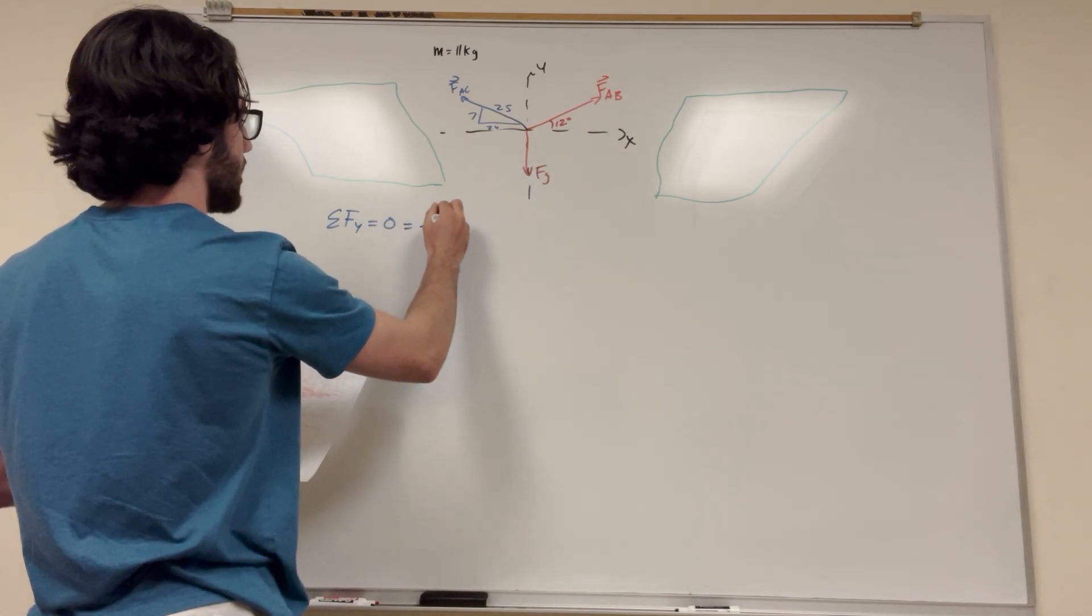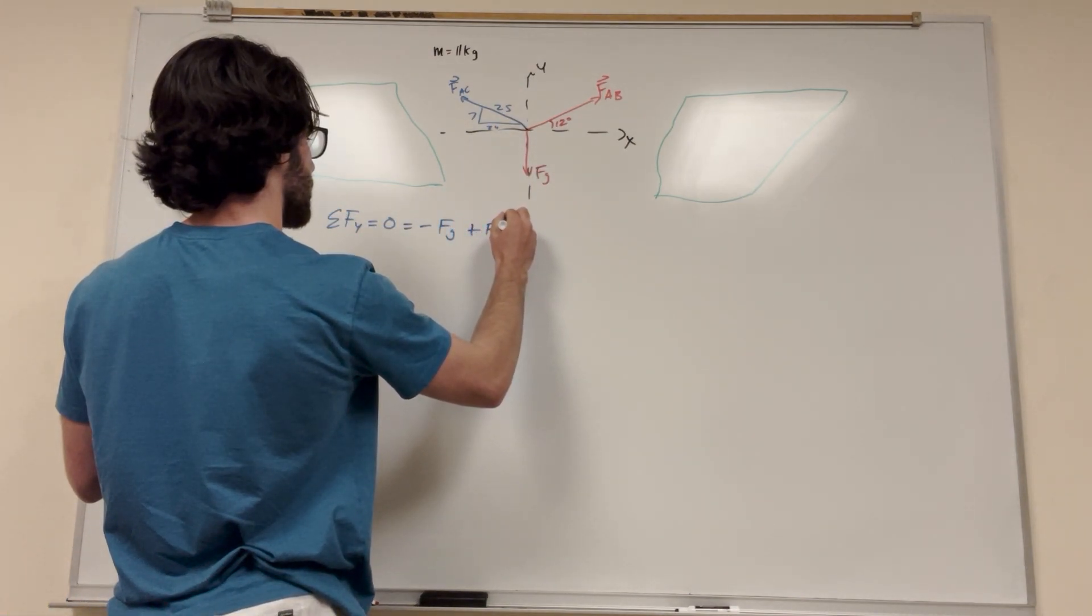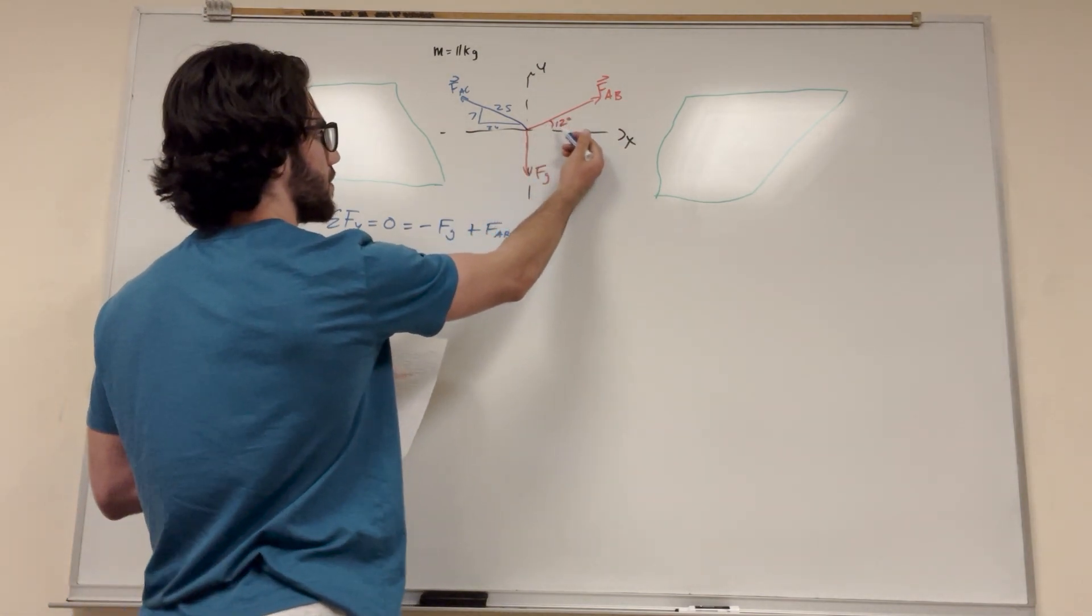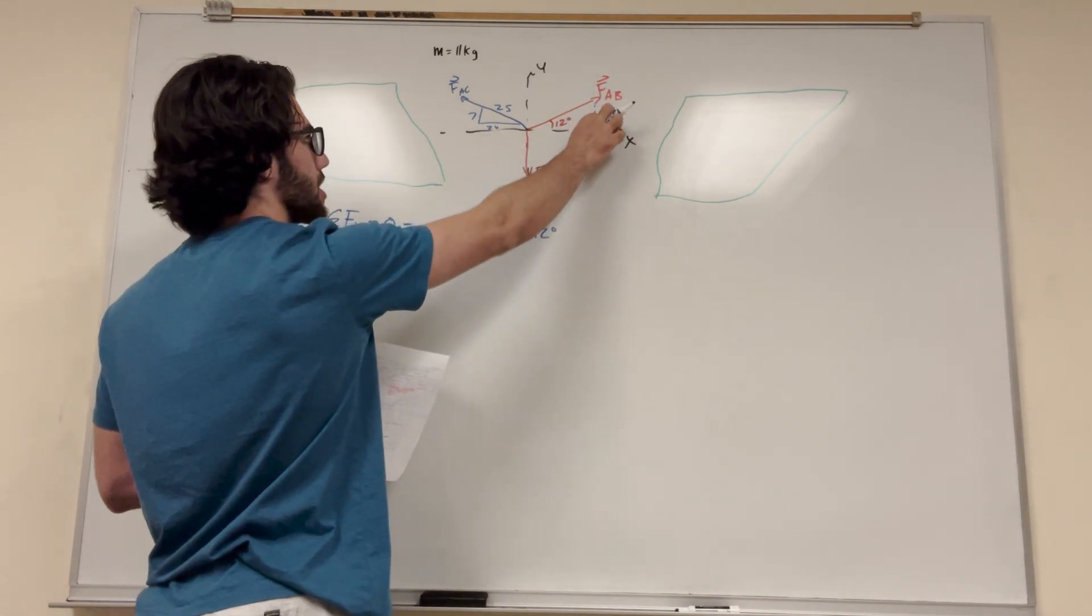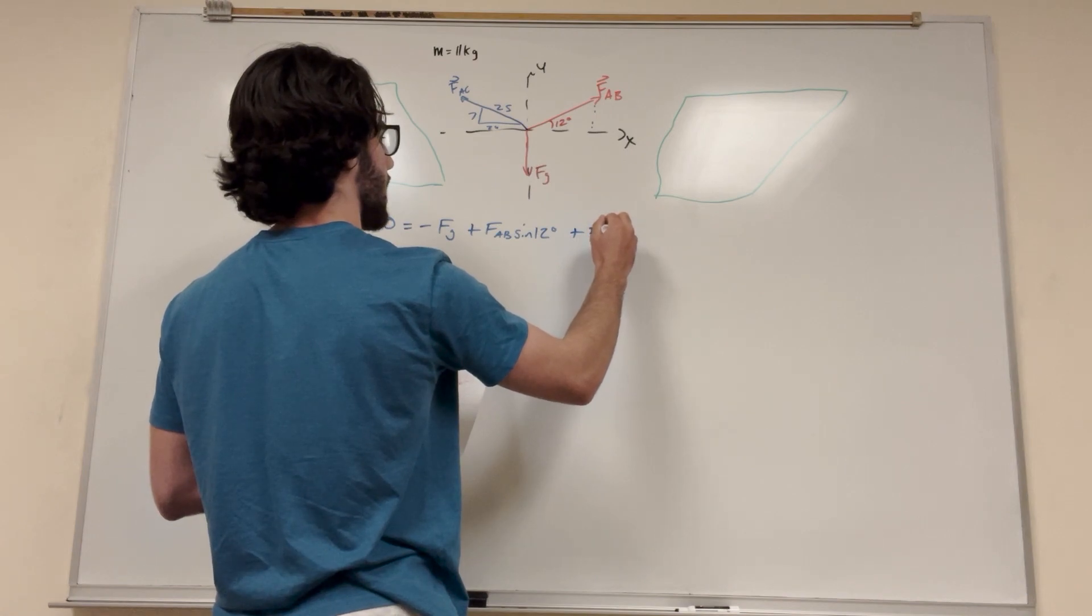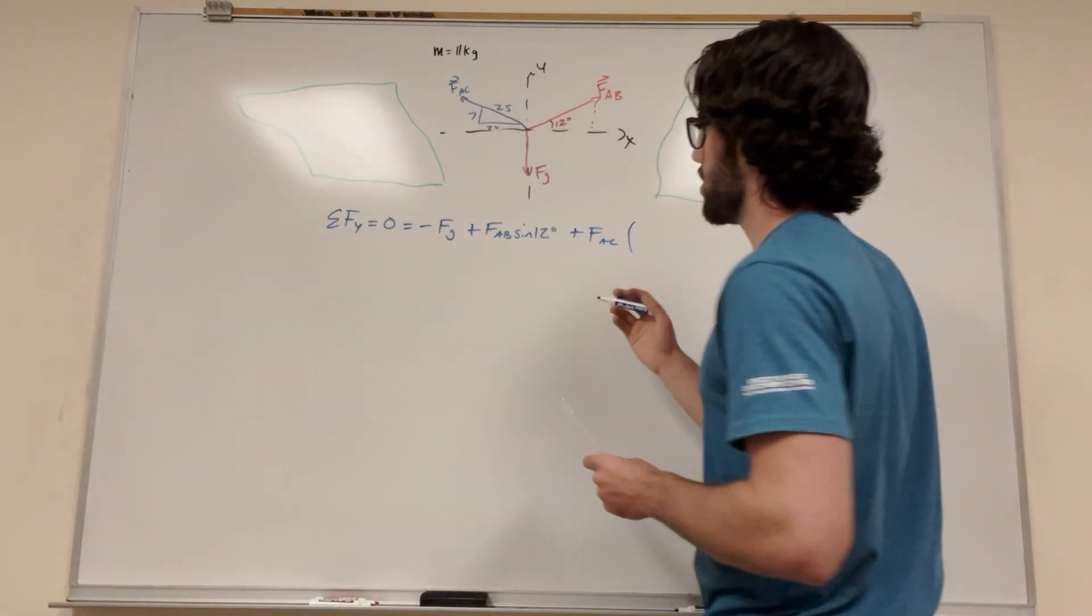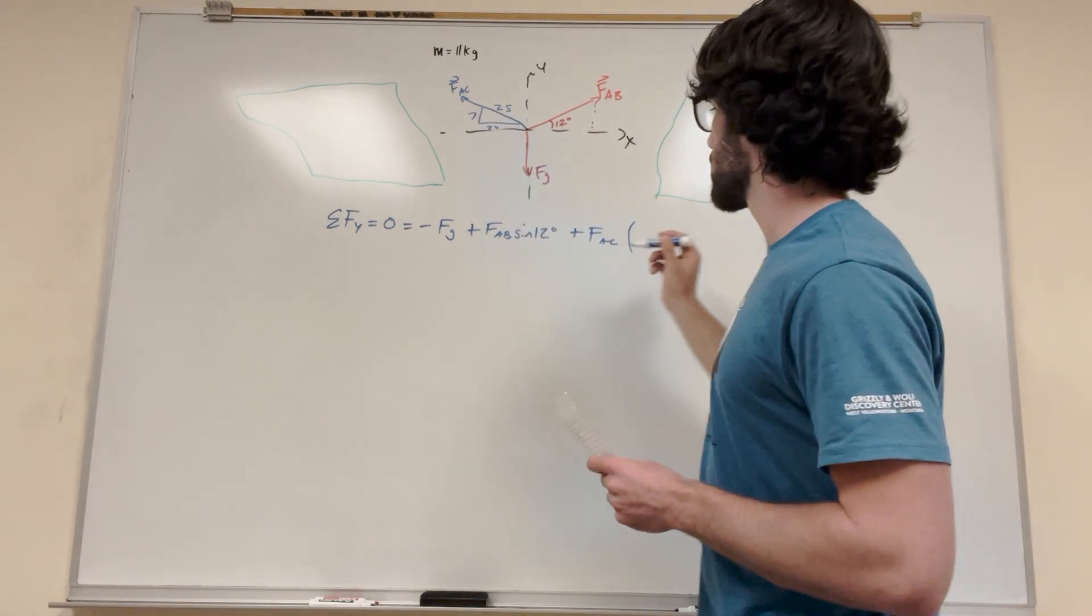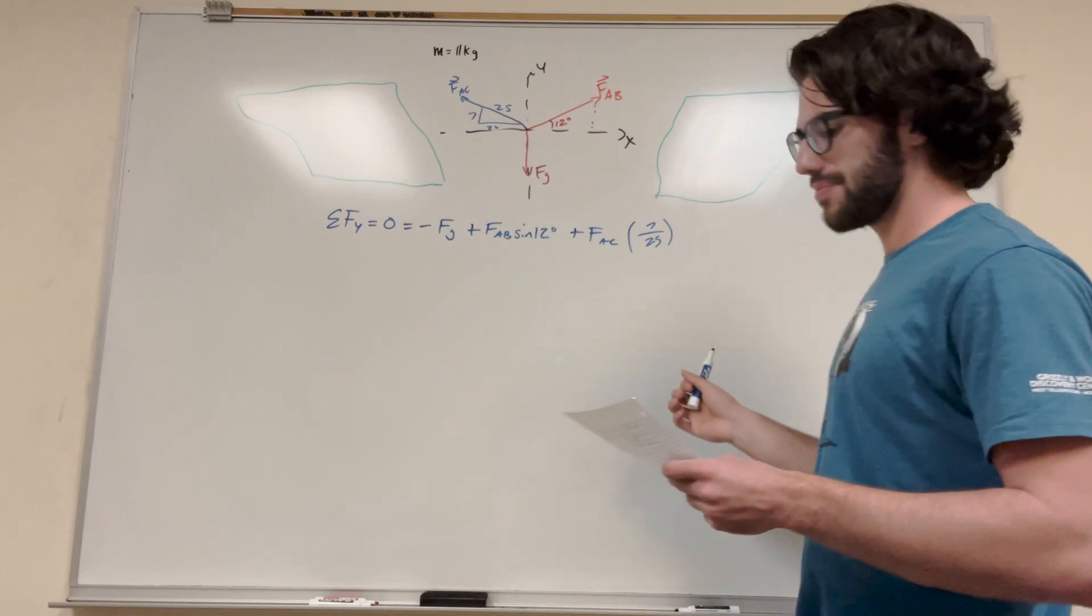So this is equal to negative force gravity. Force gravity is pulling straight down in the Y direction. So then, plus force AB, but then sine of 12 degrees. The sine of 12 degrees comes in because we're trying to find the vertical position. So because sine is opposite over hypotenuse, we're finding this right here. So force AB sine of 12 is how much this force is. So then let's do this plus force AC. And of course, we don't have the angle. We could find the angle, but an easier way to do this is just use our ratios. We know that the vertical distance to hypotenuse is 7 over 25. So we can literally just say 7 over 25 is how much force AC pulls in the vertical position direction. So there we go.